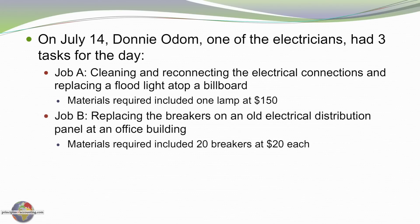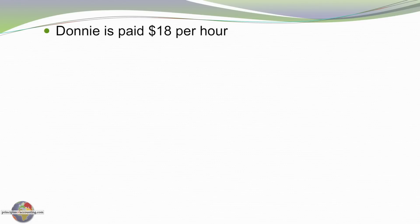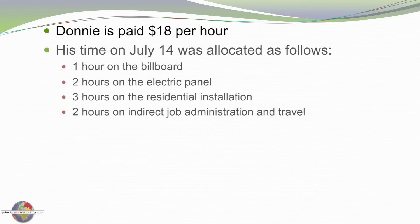Job B is replacing the breaker panel at an office building, requiring 20 breakers at $20 a piece. Job C is pulling wire at a new residence under construction, expecting to use about 500 feet of wire at 14 cents per foot. Donny is paid $18 an hour, and his time on July 14th was one hour on the billboard, two hours on the electrical panel, and three hours on the residential job.